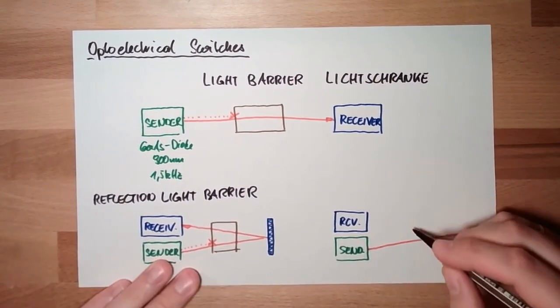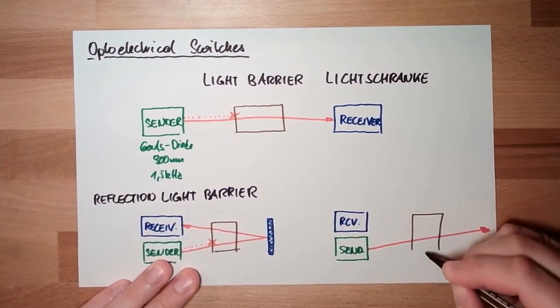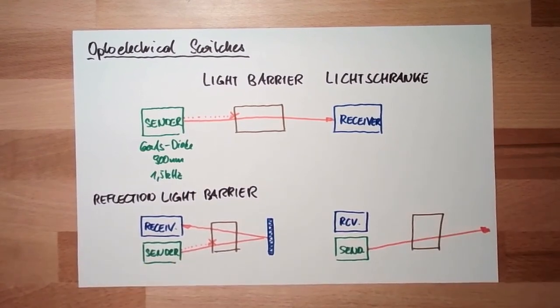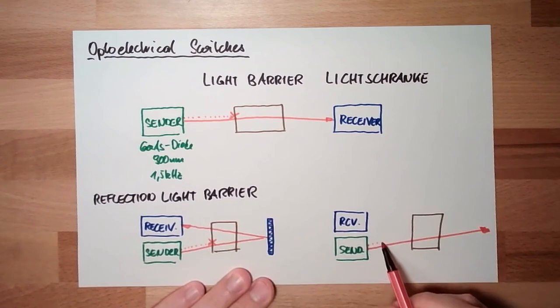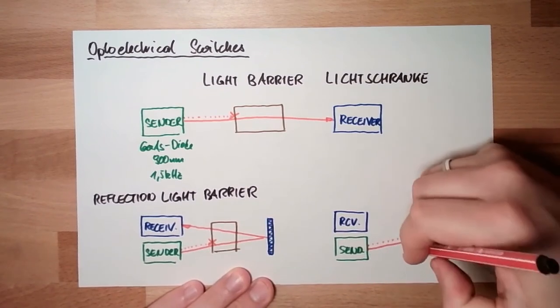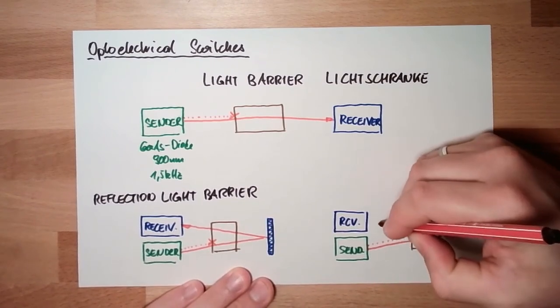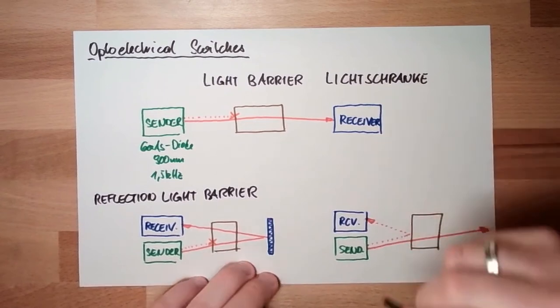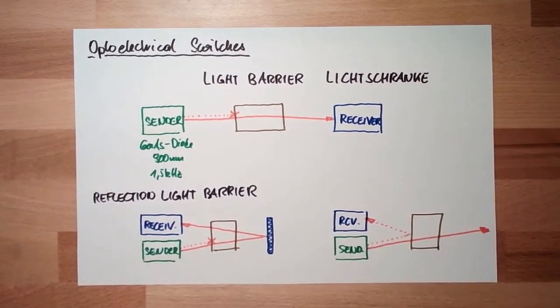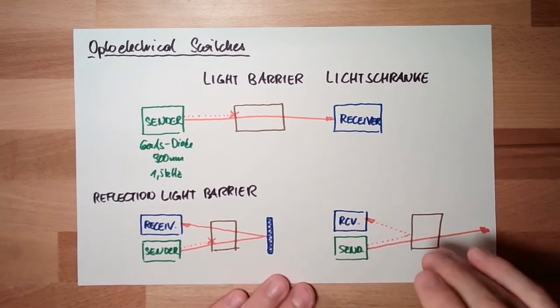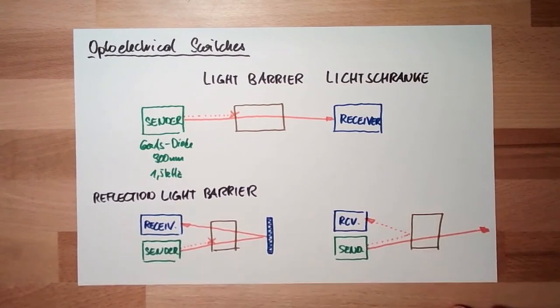Then, something is coming in between. The light of the sensor is going out. Reflected by whatever is here. Receiver gets signal. This thing here, where the good is reflecting. This is called reflex sensor.